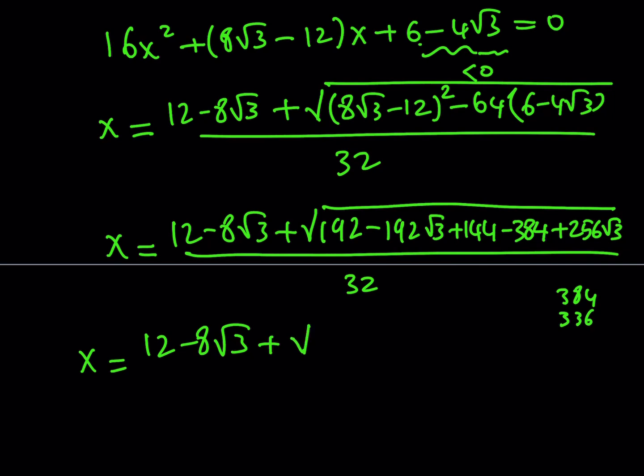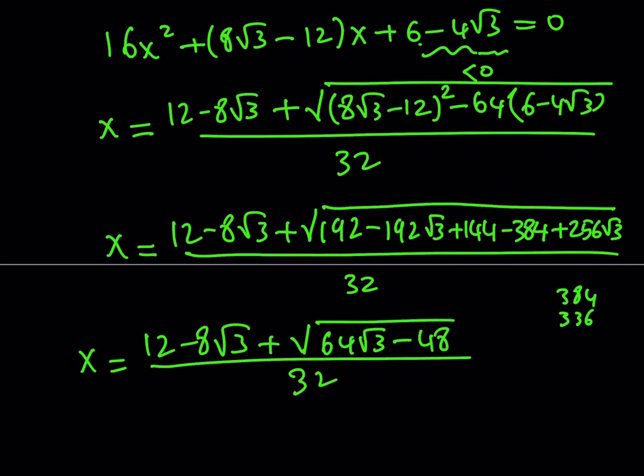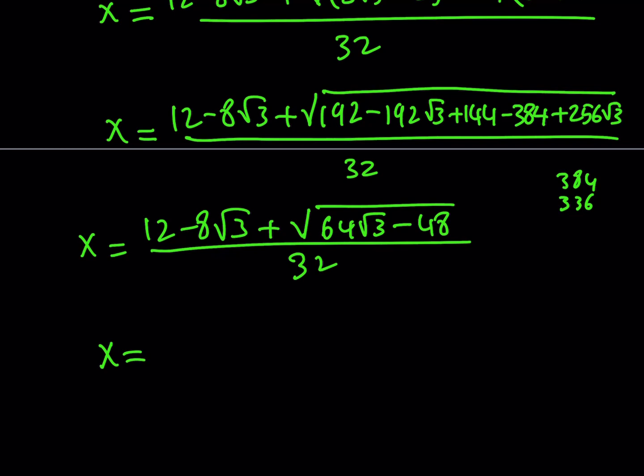256 minus 192 should be 64. So, that's going to be 64 root 3 minus, because that's going to be a negative 48. Okay, cool. So, we can take out a 16 there. I think that will help us simplify. x equals, if you take out a 16, it's going to be, the square root of 16 is going to be 4. So, I should be getting a 4 here. Inside, I took out a 16, so it's going to be 4 root 3 minus 3. I don't think this can be square rooted, can it? I don't know. It doesn't matter. I don't think so. It's probably going to stay like that.